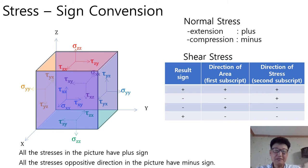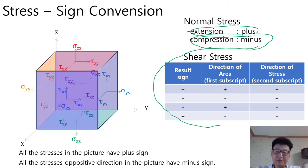Normal stresses on the tiny element are either extension or compression. A normal stress sign convention is very simple. All the stresses have plus sign for extension, minus sign for compression. Shear stress is a little bit confusing. If the signs of first subscript and that of second subscript are equal to each other, then result sign is plus. Otherwise, it is minus. This is exactly the same as sign convention for multiplication.